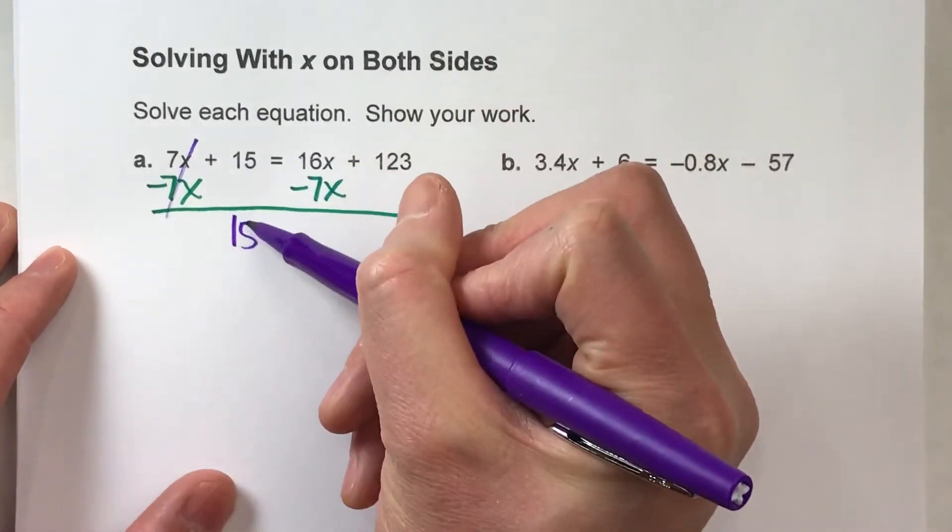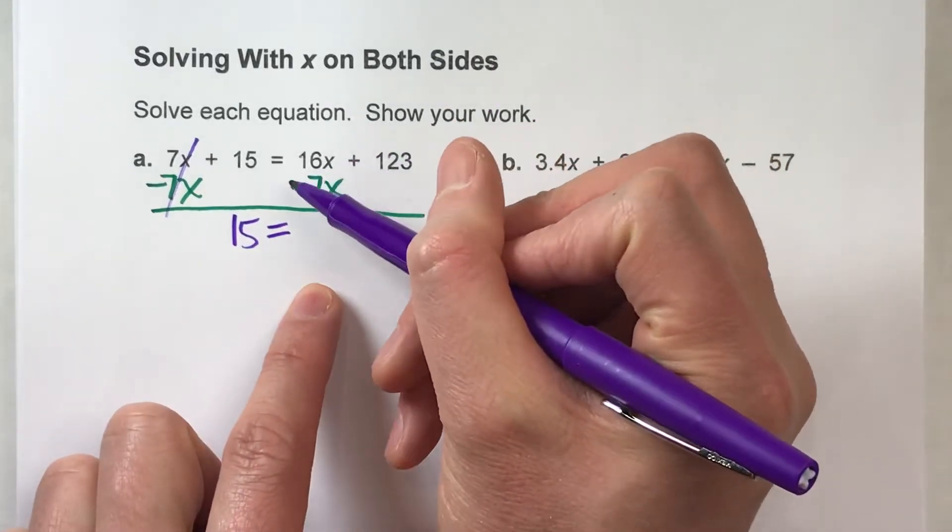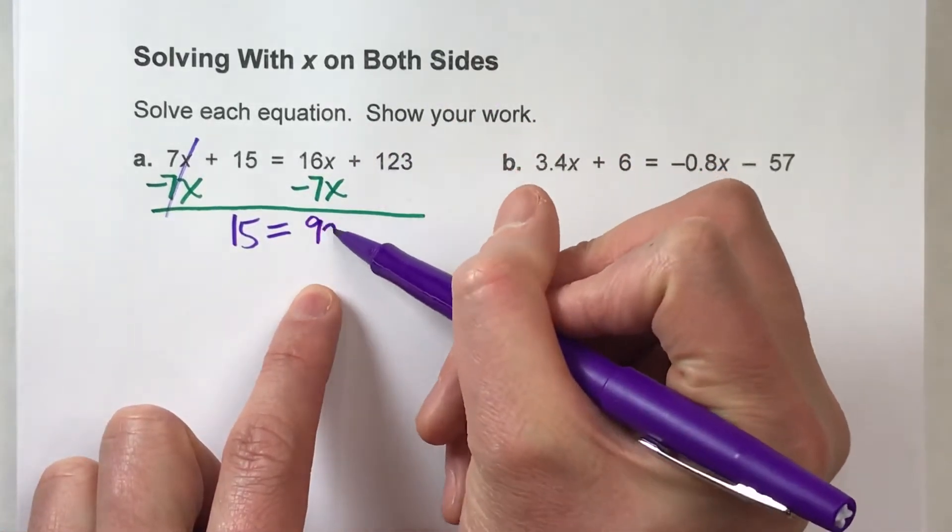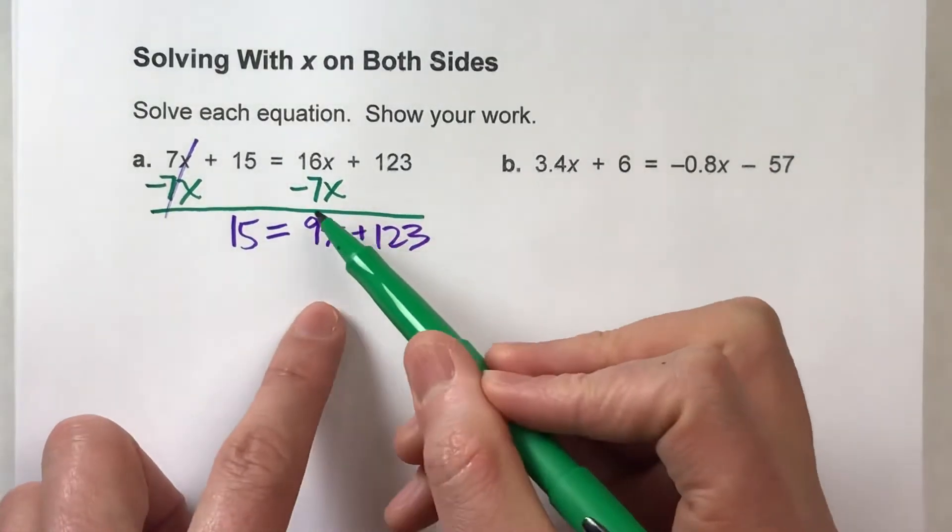Here we go. 7x's undo each other, but the 15 drops down. The equals drops down. On the other side, 16x minus 7x gives me 9x plus the 123 drops down. Alright, now we're getting closer.